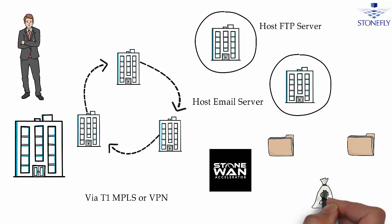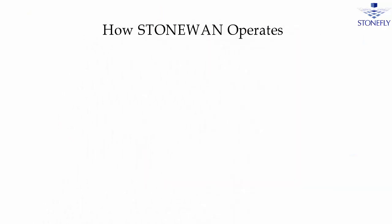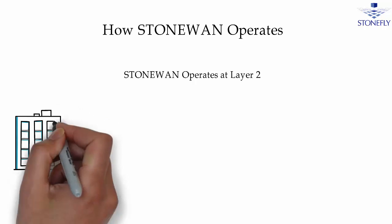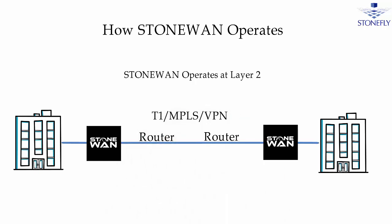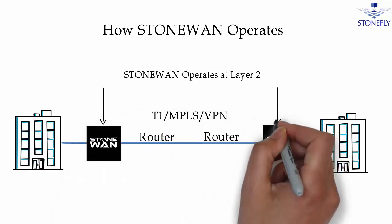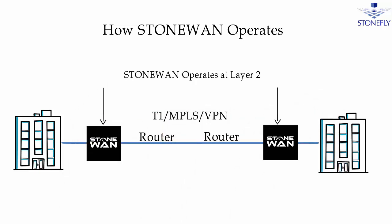Stone Van empowers the data transfer speed between these accelerated branch offices without any additional expenses. Stone Van Accelerator operates at Layer 2, so if there are two branch offices with respective gateways, Stone Van sits behind the router at each side. This means Stone Van exists in the path between the gateway and the machines on each side, allowing it to be easily incorporated within the existing branch office setup without affecting the existing network configuration.